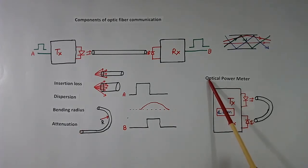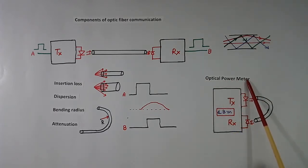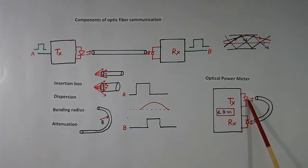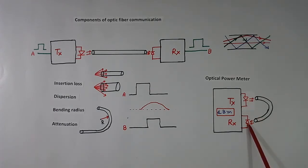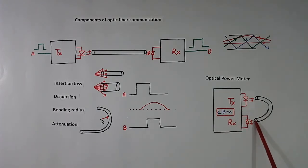This is an optical power meter. The job of an optical power meter is to measure the optical power or losses in the cable. It has one optical transmitter and one optical receiver, and it reads in dBm how much light is coming through or what the losses are.